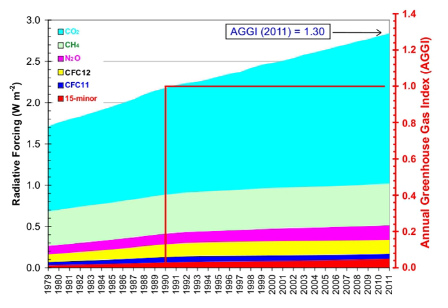Without greenhouse gases, the average temperature of Earth's surface would be about −18 degrees Celsius, rather than the present average of 15 degrees Celsius. The atmospheres of Venus, Mars, and Titan also contain greenhouse gases.